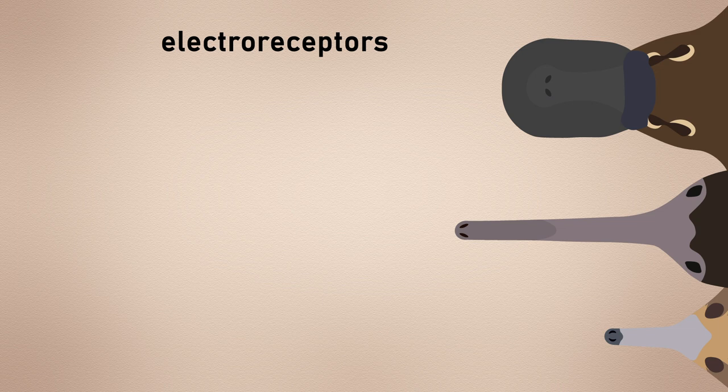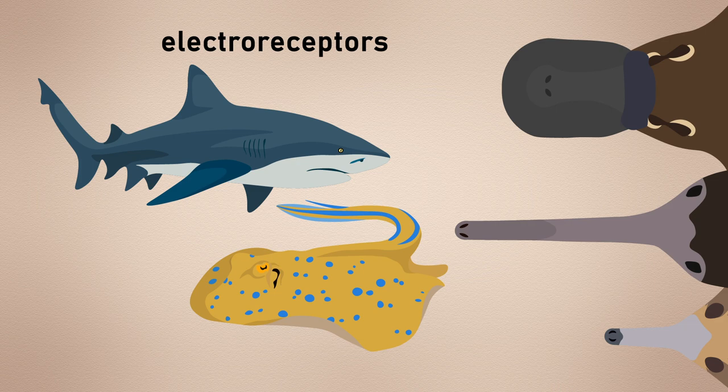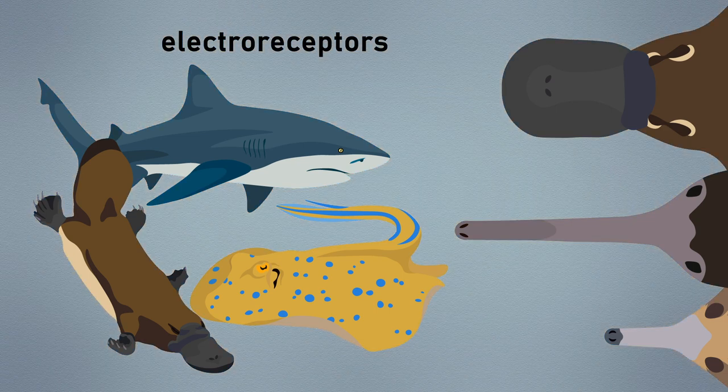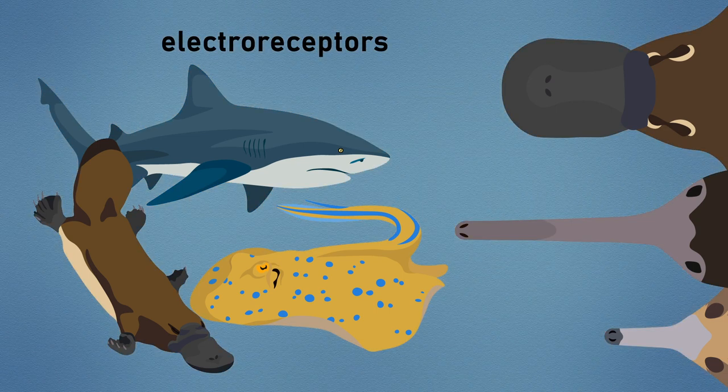Similarly, their snouts contain electro-receptors, offering them the ability to sense electrical currents produced by potential prey. This feature is perhaps most famously found in sharks and rays, but it is also seen in platypuses. Notably, this is a feature far more suited to an aquatic lifestyle where electrical currents are more easily transmitted.